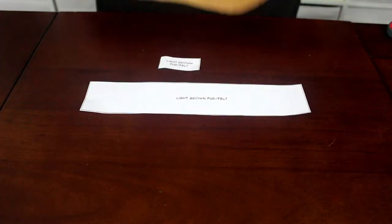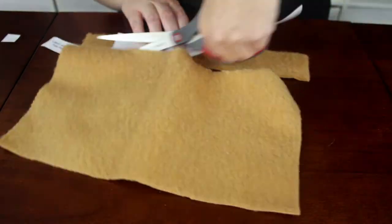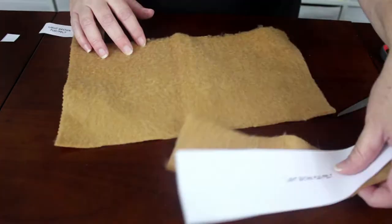Start with the pattern pieces that say light brown fur or felt. Cut out the two pieces from light brown fur.